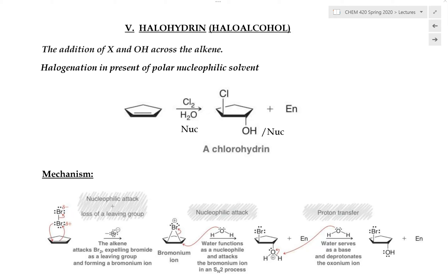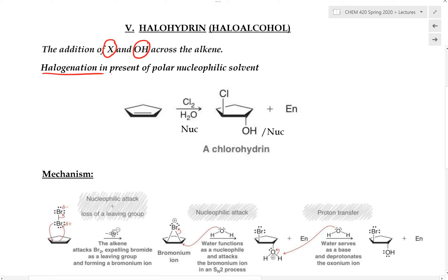In this lecture video, I'll be going over another addition reaction of alkenes. Here we will be discussing halohydrin formation, in which the two groups being added across the carbon-carbon double bond are a halogen and an OH group. These types of reactions are normally achieved whenever we do a halogenation reaction in the presence of a polar nucleophilic solvent.